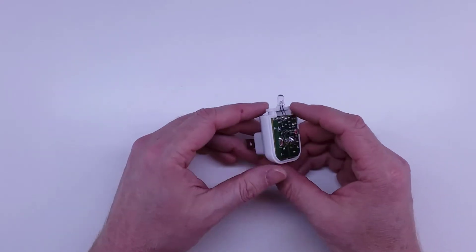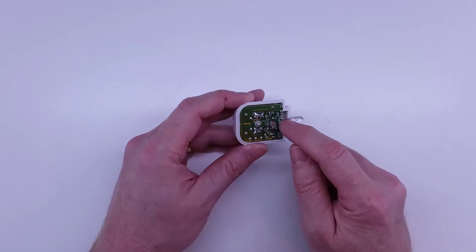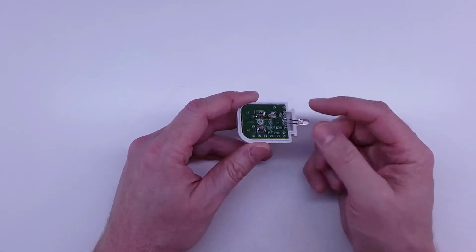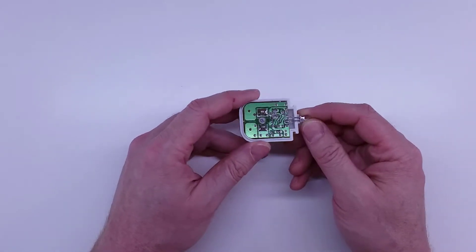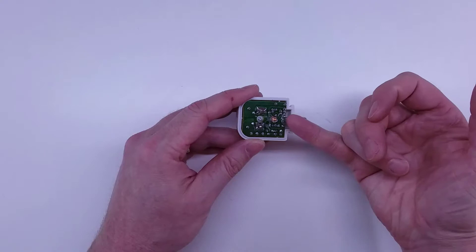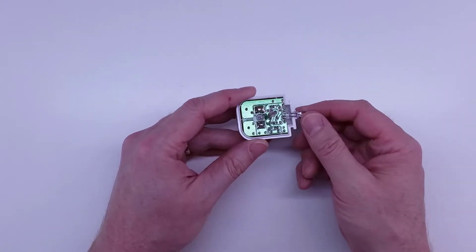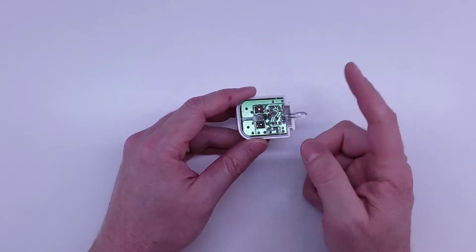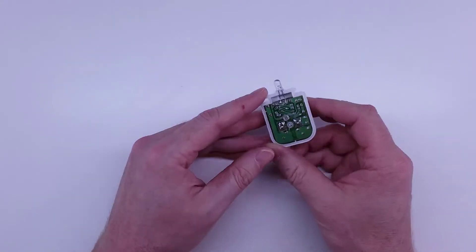Then you should be able to heat that up and this should fall right out. Depending on your version, they may or may not be through holes. If you still have trouble, just go ahead and cut the leads themselves right here as close as you can, then use a solder sucker and you should be able to get the last little remnants apart.